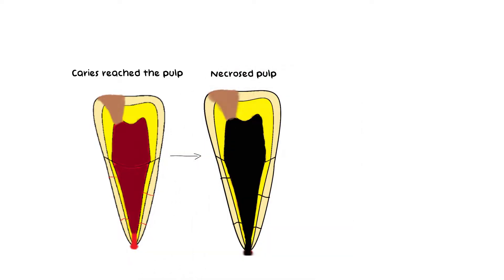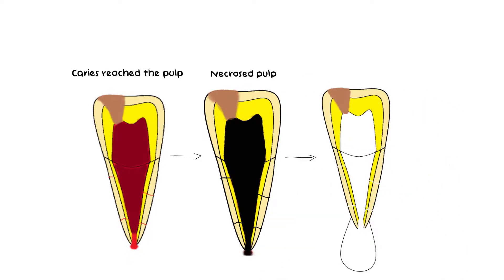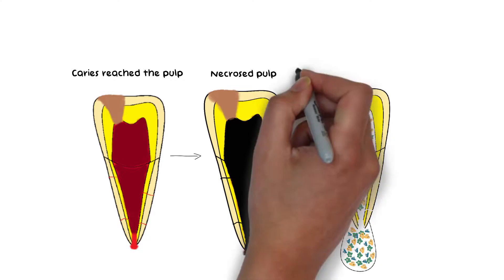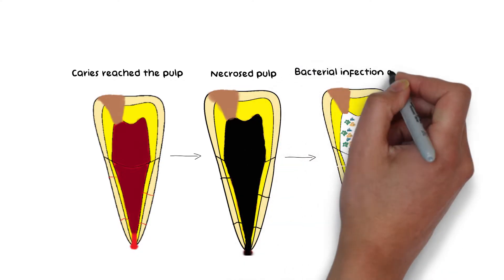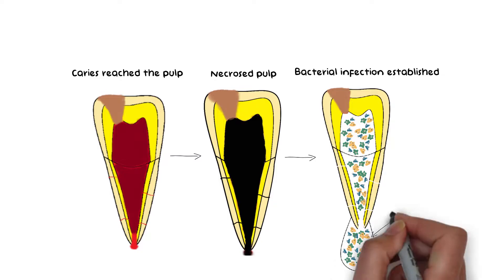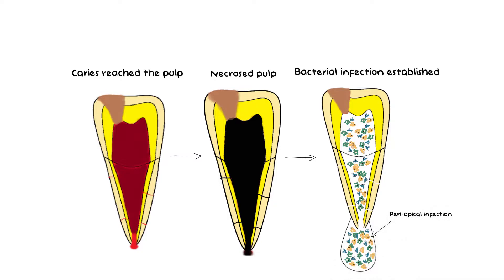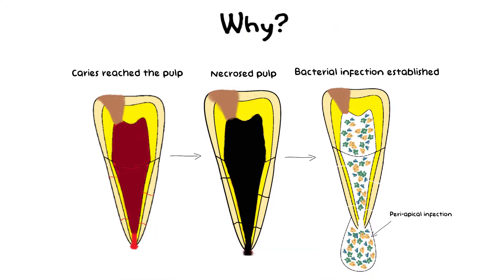Once the pulp is dead, bacteria can rapidly multiply and establish an infection in the necrosed pulp. The bacteria cause infection in the pulp and then divide rapidly once the pulp has undergone necrosis. Here, an important question arises: why do bacteria establish an infection only once the pulp has undergone necrosis?